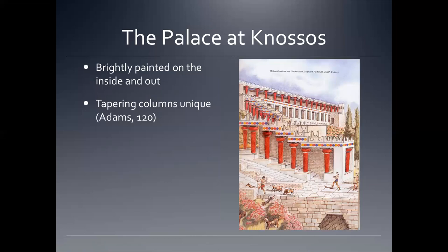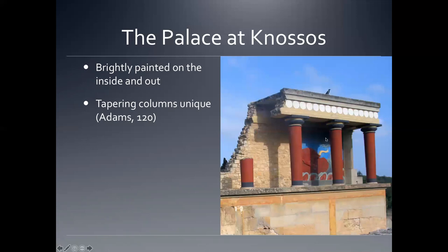The palace at Knossos is brightly painted inside and out, and there are some restorations giving an idea of what it originally looked like. The clothing shown in reproductions is what we see in the art, though it's not necessarily what people wore. The tapering columns are really unique — you often see columns that taper with the fat part at the bottom and the skinny part at the top, but this type of taper, fat at the top, is as far as we know unique. The modern reproduction with paint is on the old columns, just to give visitors an idea of what it originally would have looked like.